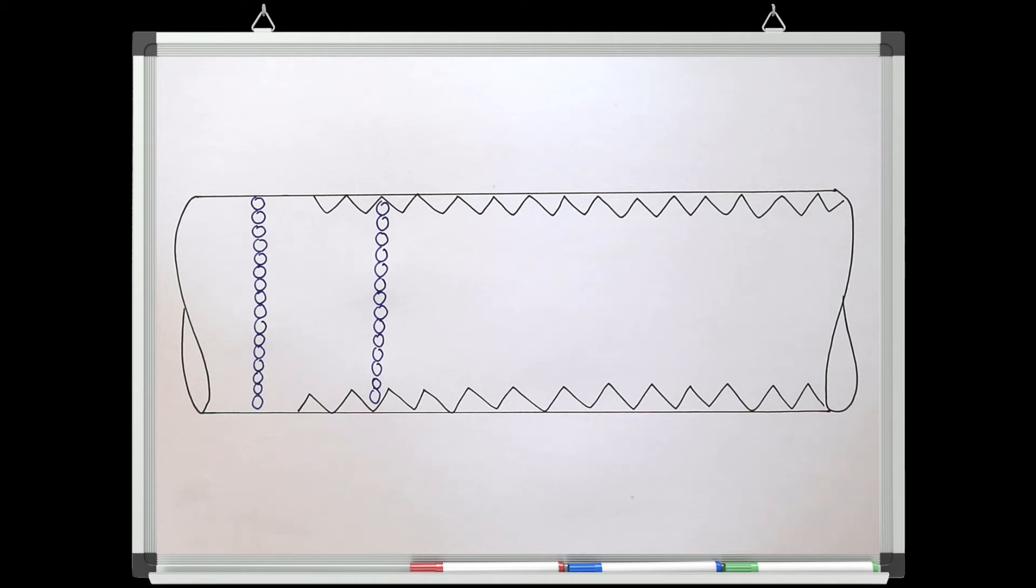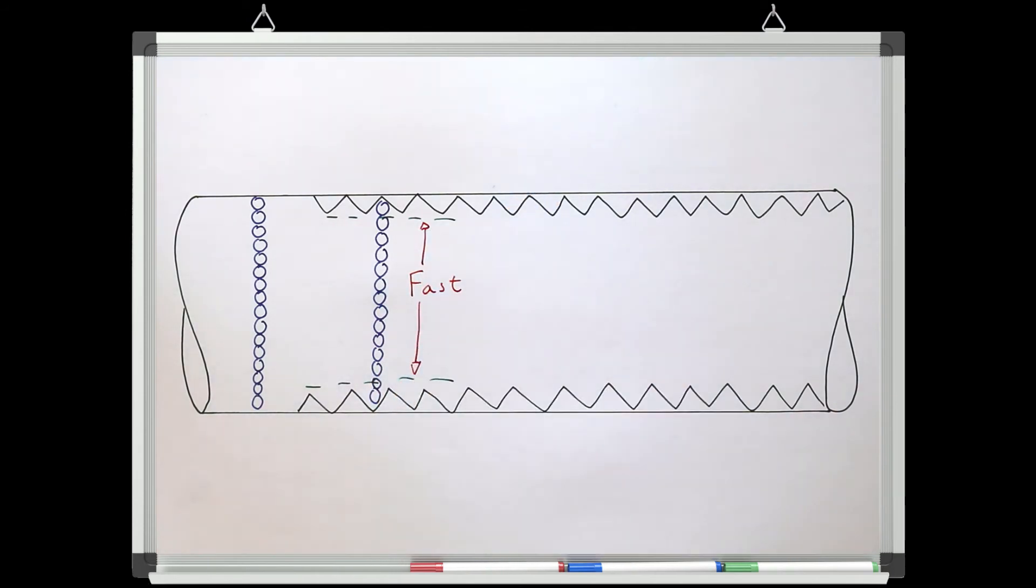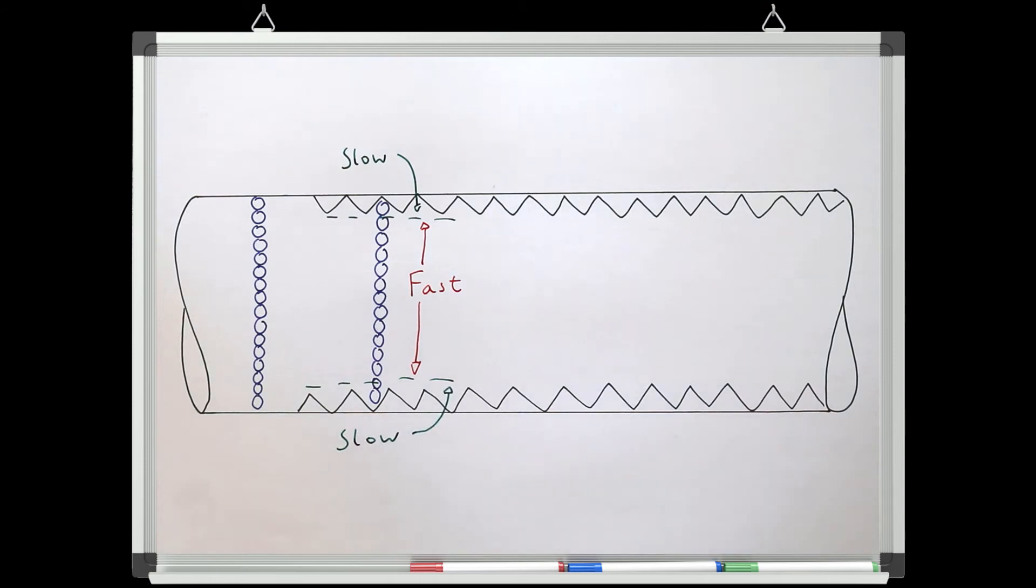If this was the only thing that was going on in the pipe, what we would have is water particles in the middle of the pipe traveling fast, and water particles right at the wall either stopped or traveling very slowly. We'd actually have two zones: a very slow zone right at the wall, and a fast zone at any distance from the wall.